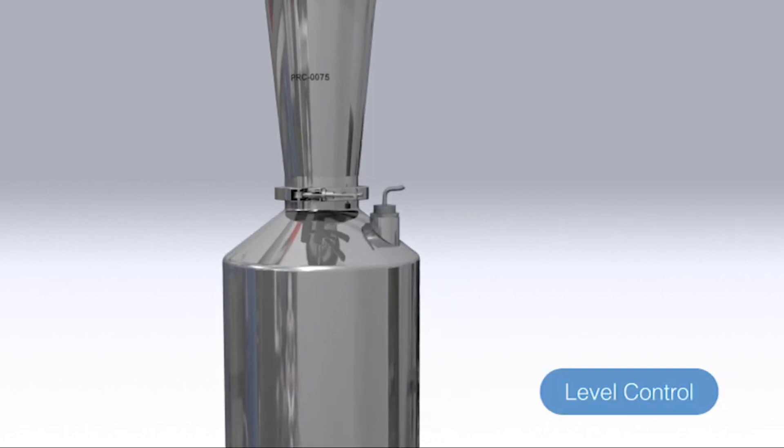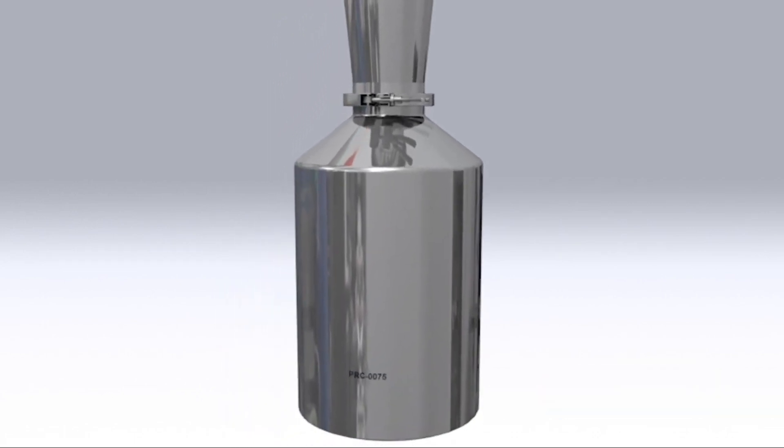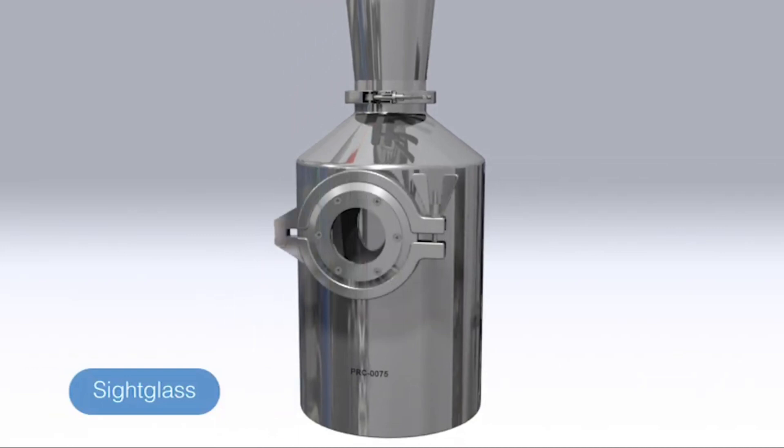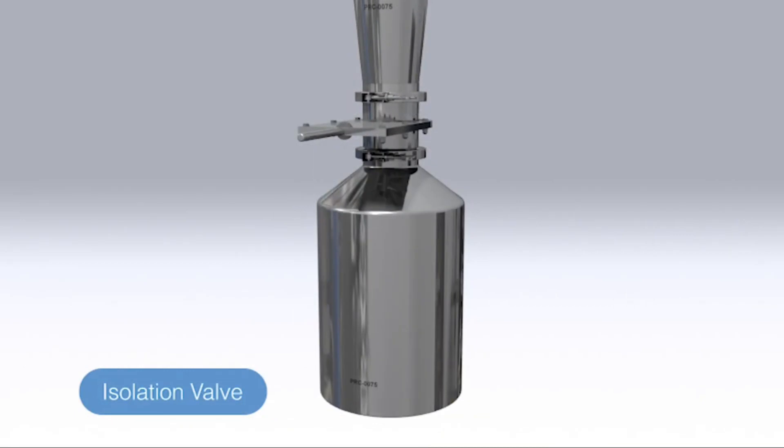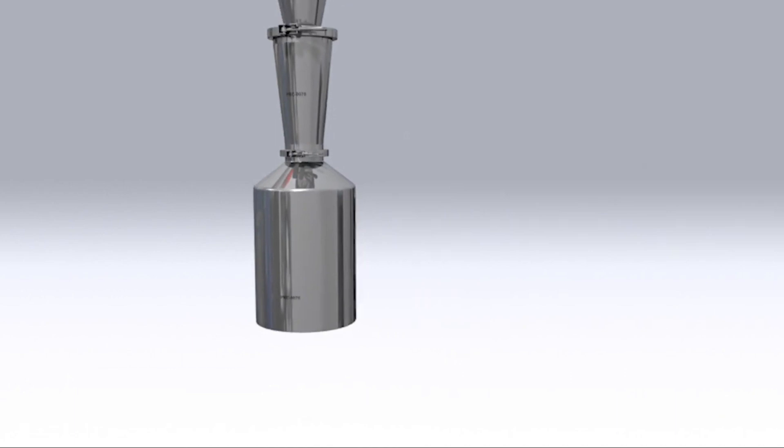Other options include a level control sensor for electronic signaling of catch pot fill level, sight glass viewing window for visual inspection of catch pot contents, and isolation valve for changing the catch pot without interrupting cyclone operation or stopping the extraction vacuum.